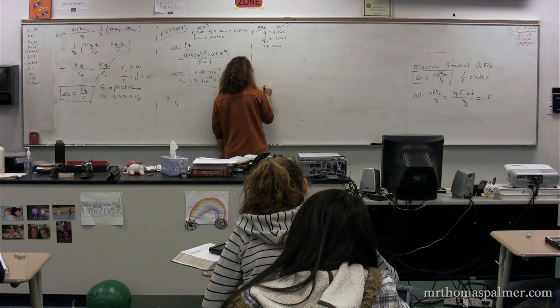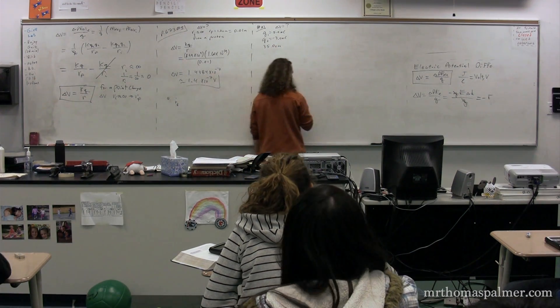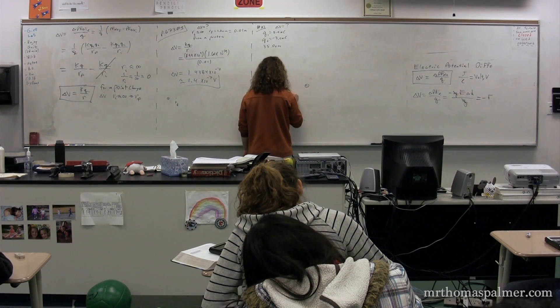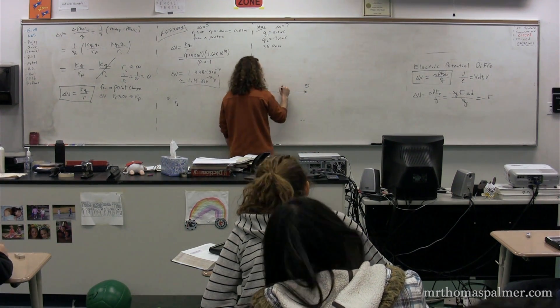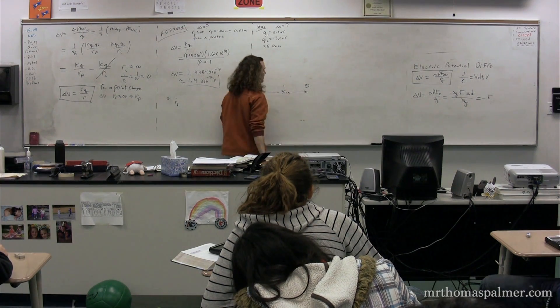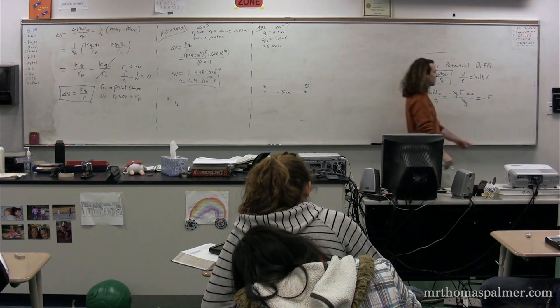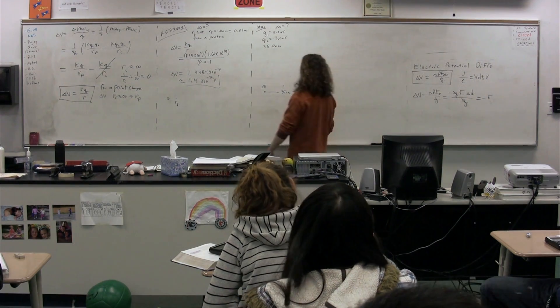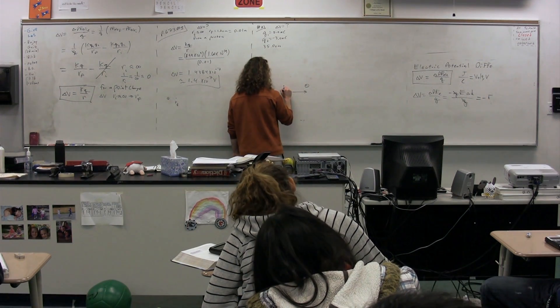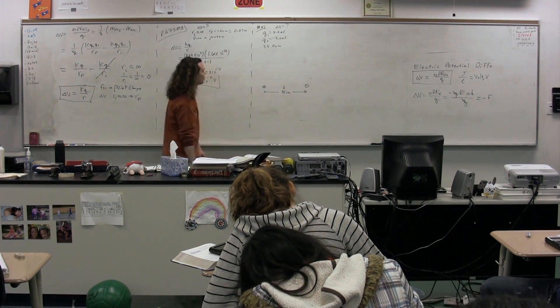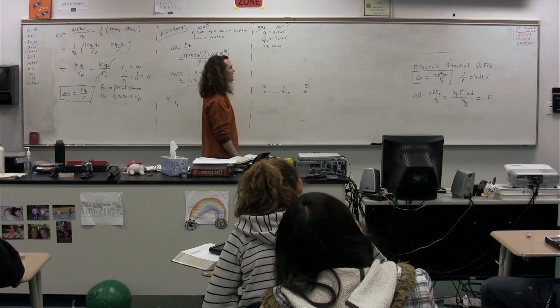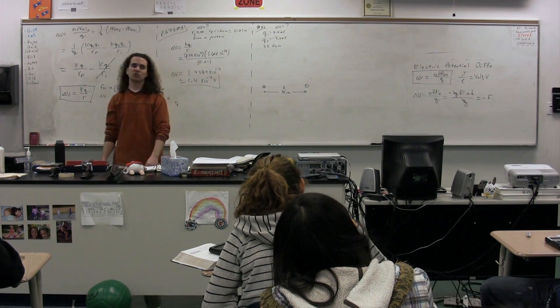We have two charges - a positive charge right here, a negative charge right here. We know there are 35 centimeters between the two, and we're trying to figure out the electric potential difference between a point infinitely far away and the final point, which is located right here, the point midway between these two charges.